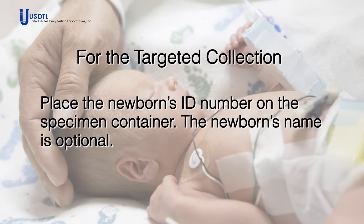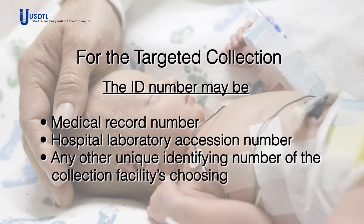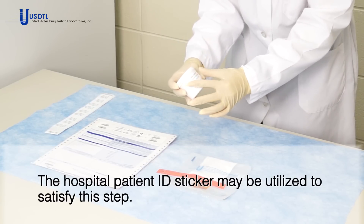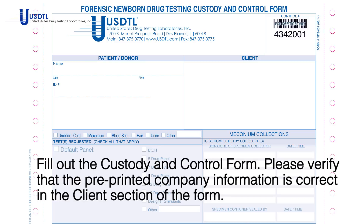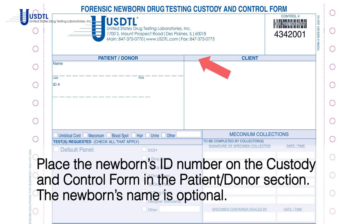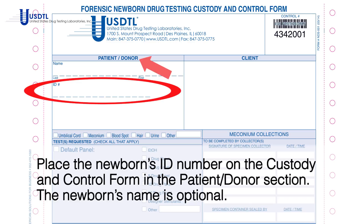For the targeted collection, place the newborn's ID number on the specimen container. The newborn's name is optional. The ID number may be the medical record number, hospital laboratory accession number, or any other unique identifying number of the collection facility's choosing. The hospital patient ID sticker may be utilized to satisfy this step. Fill out the custody and control form, and verify that the pre-printed company information is correct in the client section. Place the newborn's ID number on the custody and control form in the patient donor section. The newborn's name is optional.